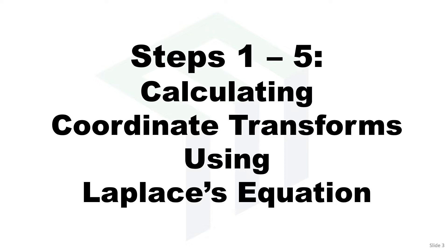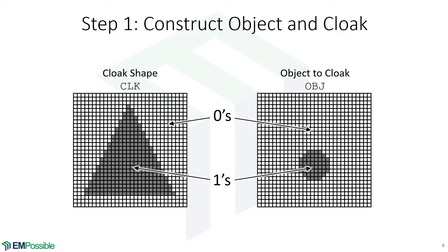Calculating coordinate transforms using Laplace's equation. Step one: we're going to build two arrays that define our cloak and our object. These arrays are zeros everywhere, but we put ones identifying either where the cloak is or the object we want to cloak. Here we have a device shaped like a triangle, trying to conform waves around a circular region embedded within that triangle. So the array CLK for cloak has zeros everywhere but ones where the triangle is, and the object array has zeros everywhere except ones where the object is.